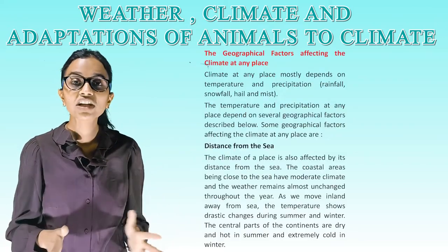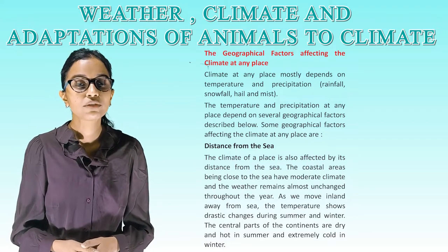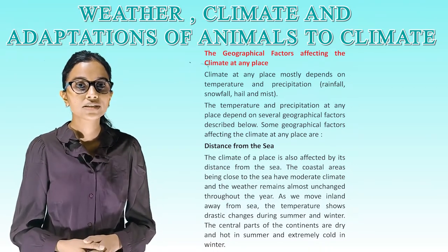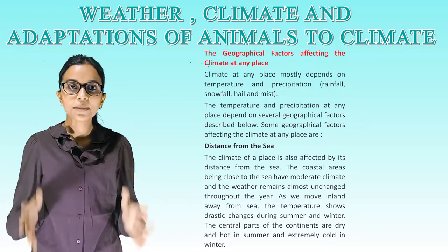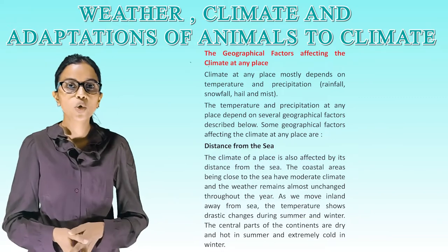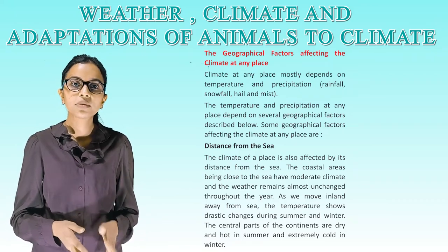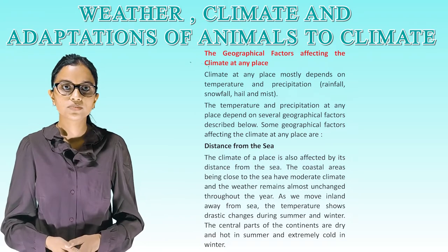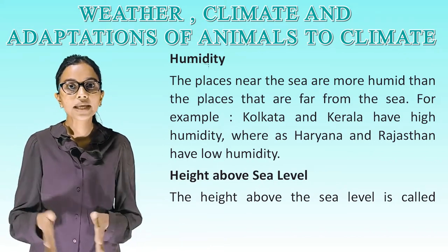The geographical factors affecting the climate at any place: climate mostly depends on temperature and precipitation — rainfall, snowfall, hail and mist. One factor is distance from the sea: coastal areas being close to the sea have a moderate climate and weather remains almost unchanged throughout the year. As we move inland, temperature shows drastic change during summer and winter. Places near the sea are more humid; for example, Kolkata and Kerala have high humidity.